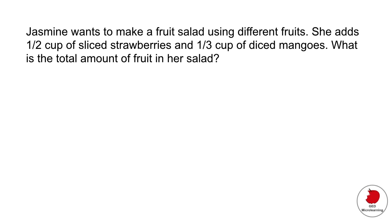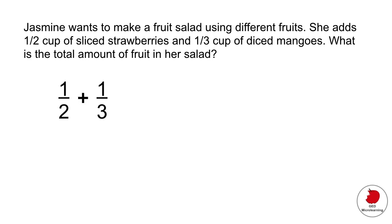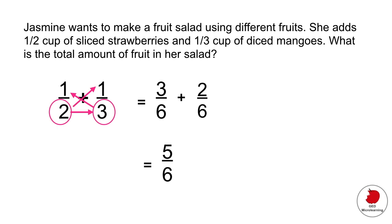Problem two: Jasmine wants to make a fruit salad. She adds half a cup of strawberries and one-third of a cup of mangoes. What is the total amount of fruit in her salad? We add one-half plus one-third. Using the bow method: 2 times 3 gives a common denominator of 6. Then 3 times 1 is 3, and 2 times 1 is 2. So three-sixths plus two-sixths equals five-sixths. That's the total amount of fruit in her salad.